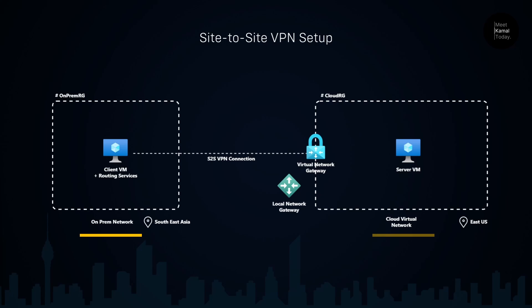In this case, it is going to be a Windows virtual machine with routing services installed. The last resource to explain is the local network gateway — this is the Azure representation of your local network's gateway device. When you create a local network gateway, you should configure the public IP address of your on-premises gateway. I'm going to create some of these resources using Azure CLI to save time, and after that I'm going to deploy the important resources using the Azure portal.